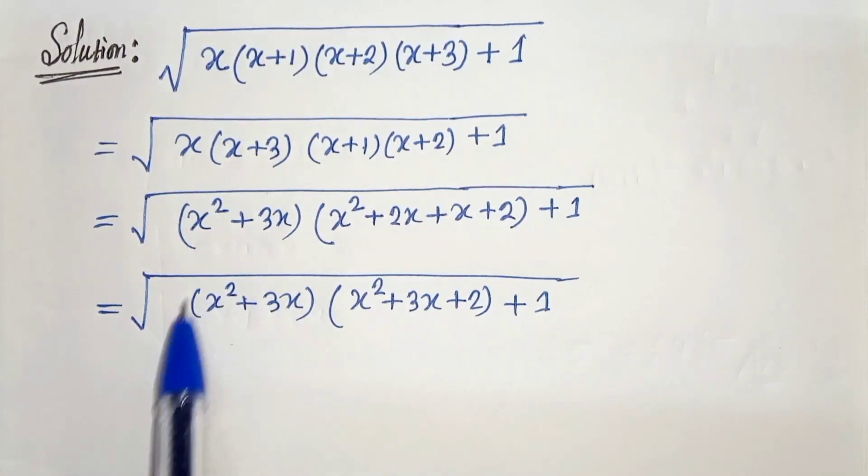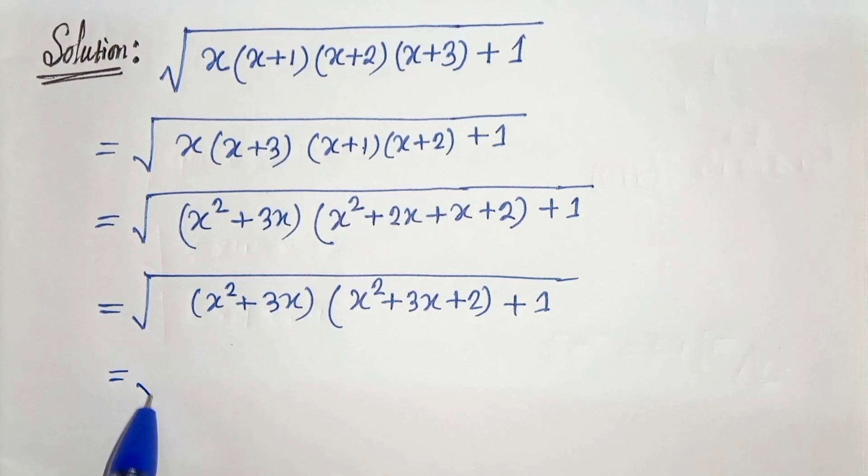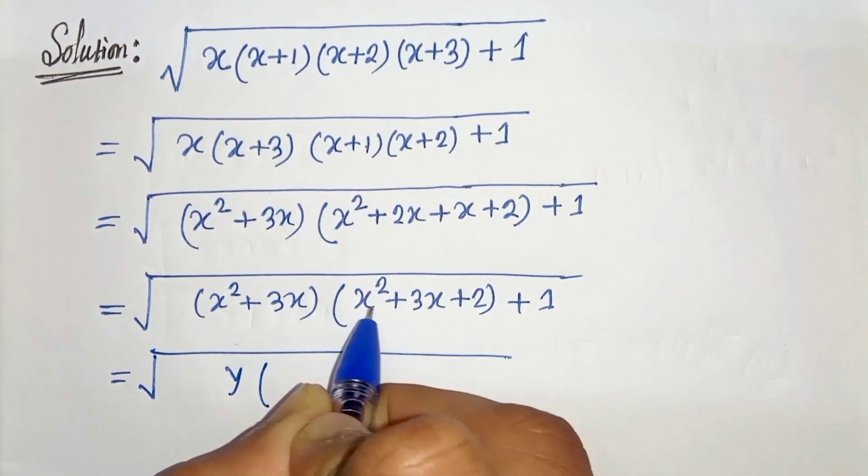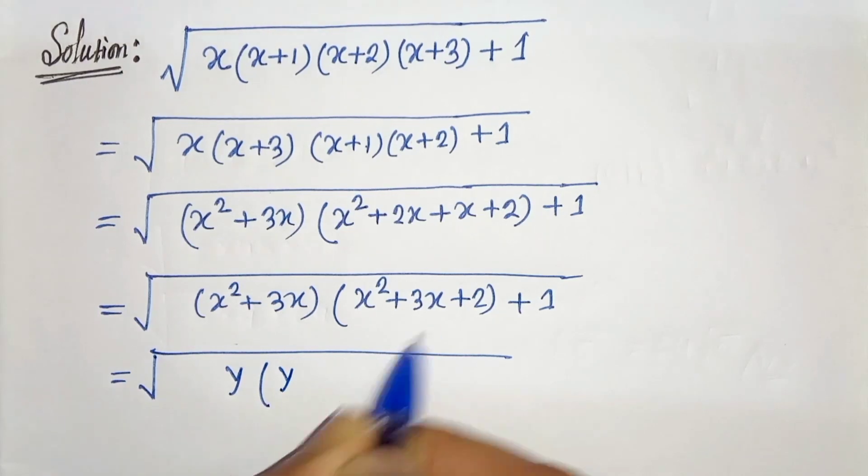In the next step, let's consider x squared plus 3x as y. So x squared plus 3x as y. So here we will get y times y plus 2 plus 1.